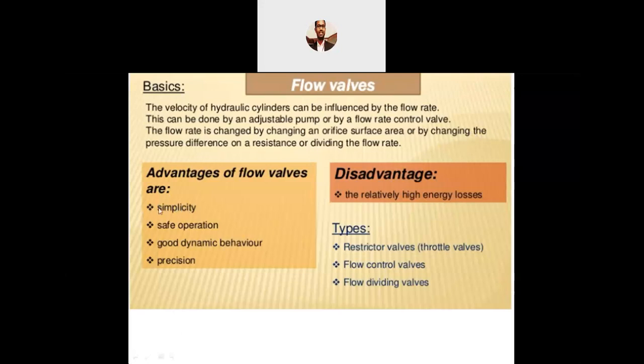The advantages of flow control valves are that they are very simple, safe in operation, have good dynamic behavior, and are highly precise. The disadvantage is that there are relatively higher losses — the pressure energy carried by the flow will be lost when it is restricted. If water is in the second floor it possesses potential energy, which converts to kinetic energy flowing through the pipes, but when you restrict it with a tap it loses energy. The three different types of flow control valves are: restrictor valves, flow control valves, and flow dividing valves.